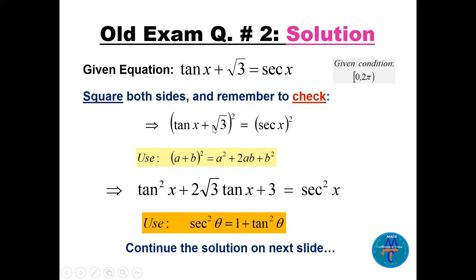Squaring the left side: (a + b)² = a² + 2ab + b², so we get tan²x + 2√3 tan x + 3 = sec²x. Now we can use the identity: sec²θ = 1 + tan²θ. Substituting on the right side, we replace sec²x with 1 + tan²x.